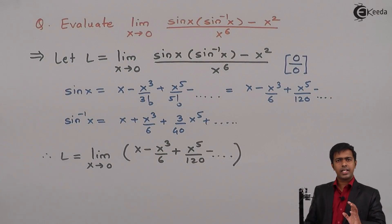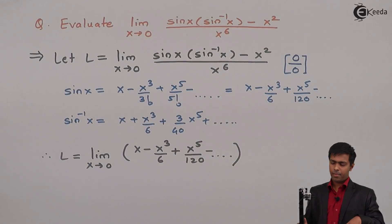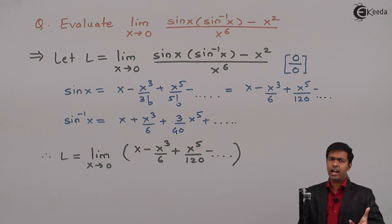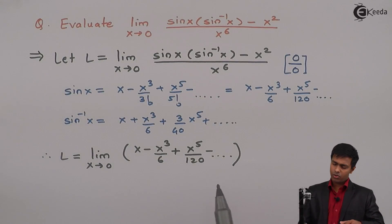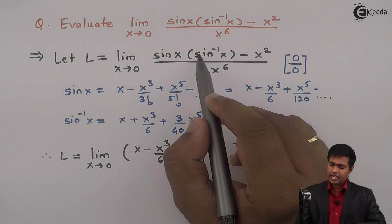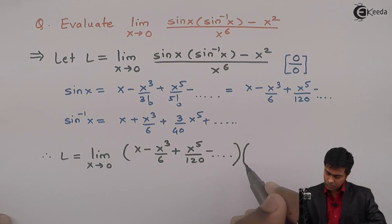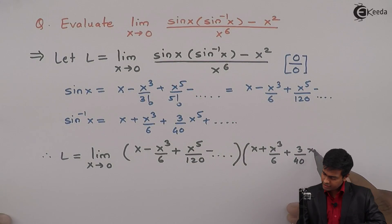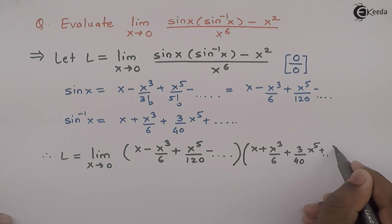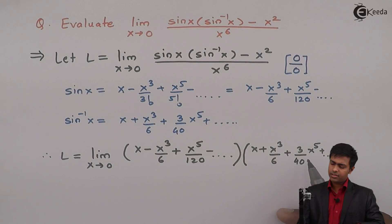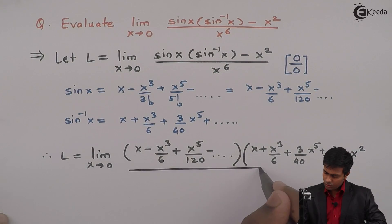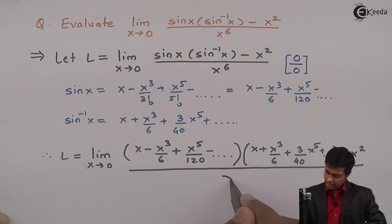So I will consider the maximum power as x⁶. In the sin(x) series the next term would be x⁷, which I do not want. Similarly for sin inverse(x), the series is x plus x³/6 plus 3/40 · x⁵ plus so on, also restricted to x⁵. The last term in the expression is minus x squared, all upon x raise to 6.